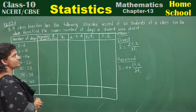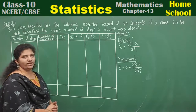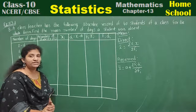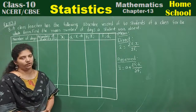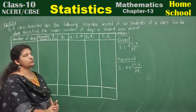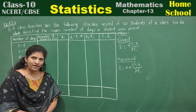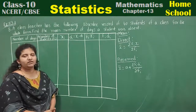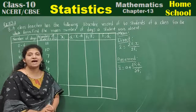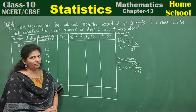A class teacher has the following absentee record of 40 students of a class. This is the data collected by a class teacher of 40 students' absent record for the whole term. Find the mean number of days a student was absent. We need to calculate the mean number of days a student was absent in her class — the mean for the whole term.